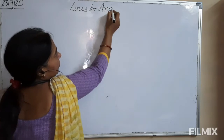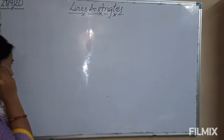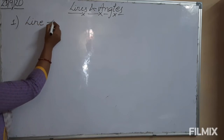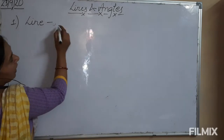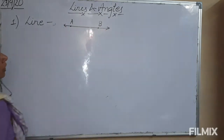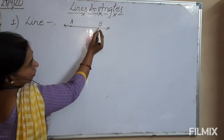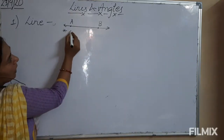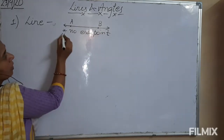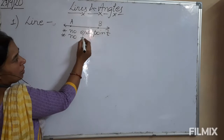Lines and Angles. In this topic, we will take some introduction. First point is line. As by the diagram, look what is a line. We can draw a line with points A and B. A line can extend in both directions endlessly, so we can say it has no end point and no fixed measurement.